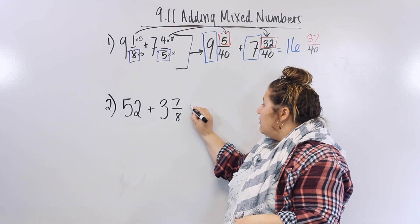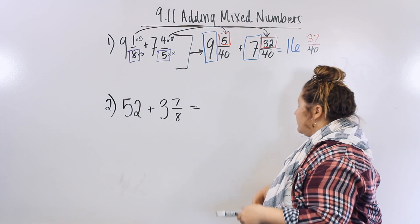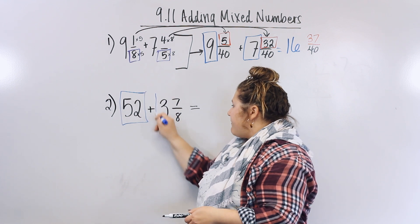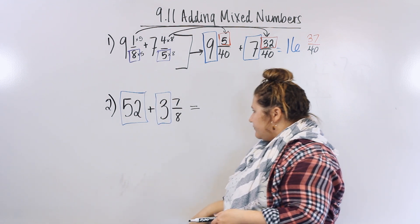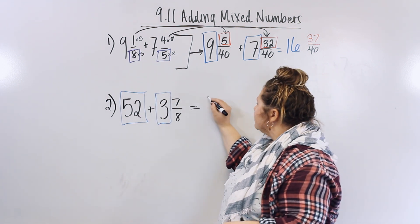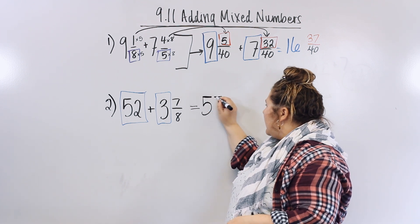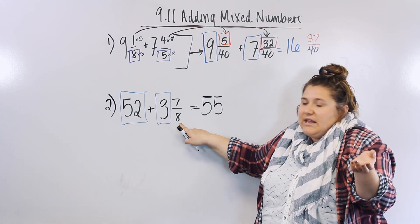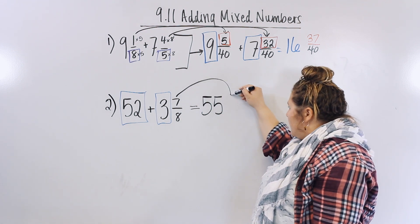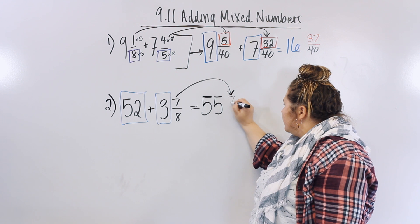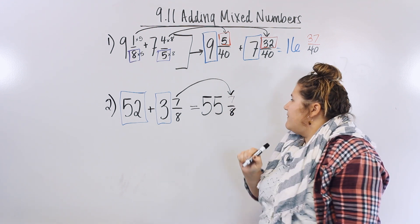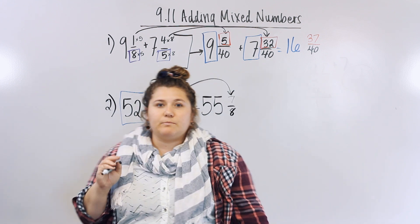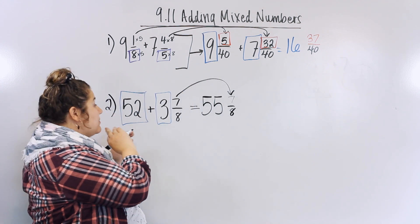So all we have to do here is add all the whole numbers together, which is fifty-five, and then we just bring this fraction over because it's not adding to anything. We got lucky there. Fifty-five and seven-eighths. A few problems will be like this on your homework - this is actually number two for your homework.